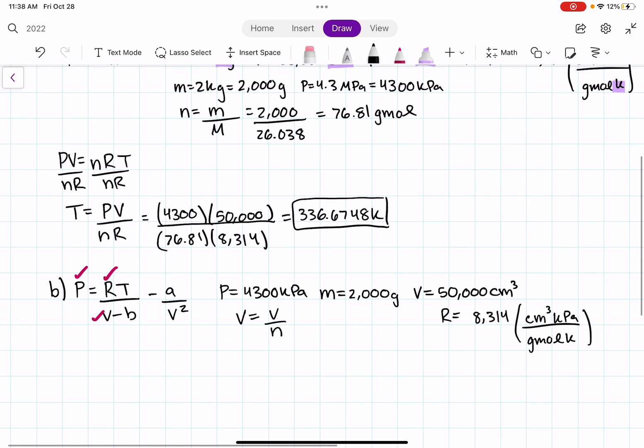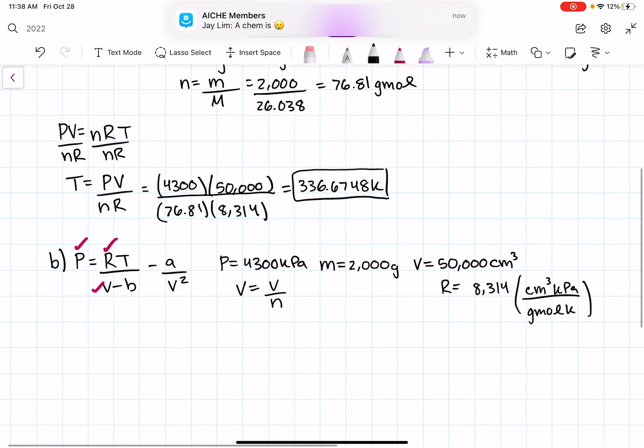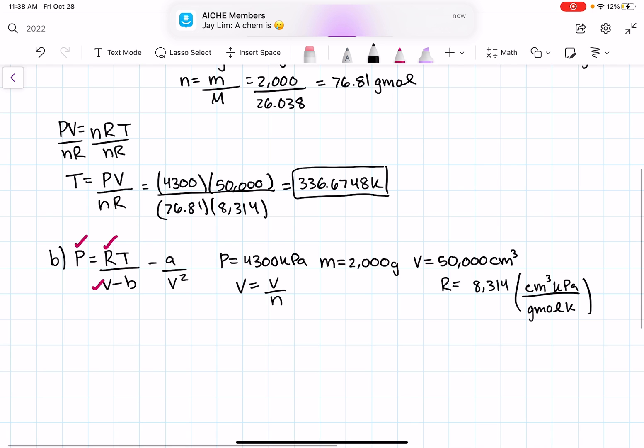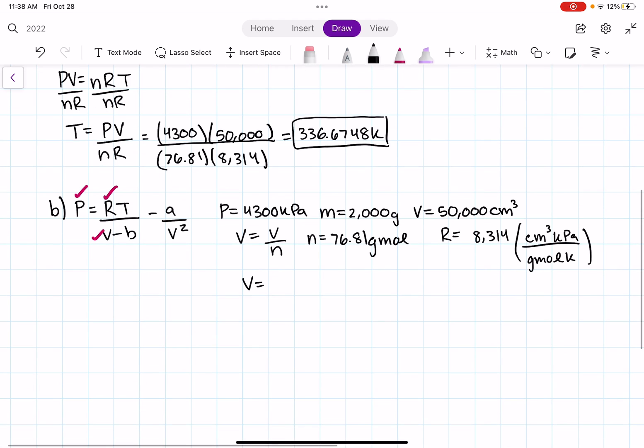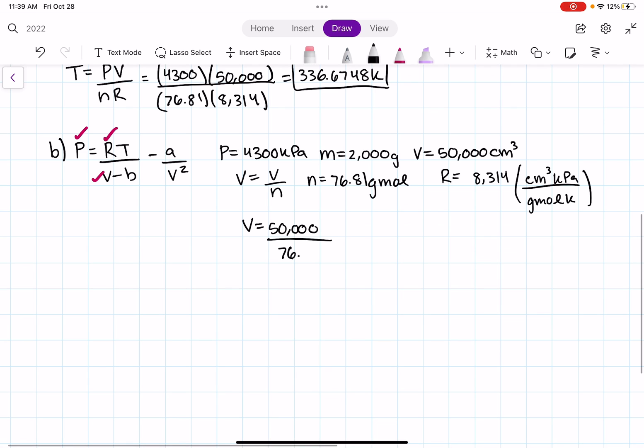And we figured out what the moles were in our ideal gas equation. So we know that our moles is equal to 76.81 gram moles. So my molar volume is going to be my volume, which was 50,000 centimeters cubed, divided by our moles, 76.81. And after plugging that into a calculator, we get the molar value equaling to 650.9569. Great. So now we have molar volume.